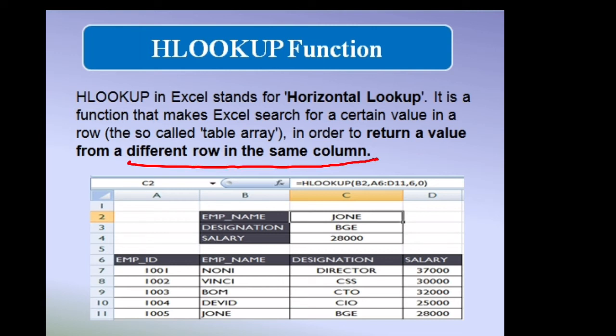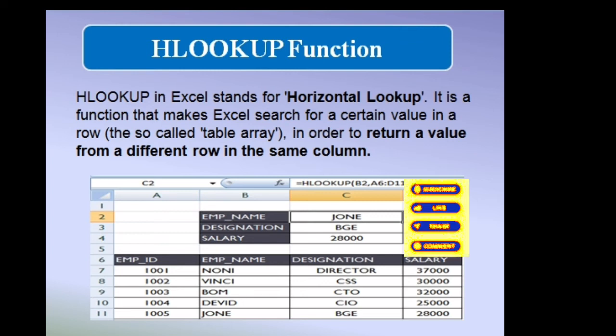If you want to know the employee zone through the HLOOKUP function, just type equals to HLOOKUP. In brackets, mention B2, which is your employee ID cell address, and then select the range like A6 to D11. Then mention the row number 6 because we want to search the zone. At last, mention 0. It will search, and if it is true, it will show the zone.